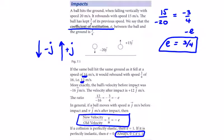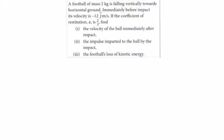In this example, a football of mass 2 kilograms is falling vertically towards horizontal ground with velocity minus 12j m/s. The coefficient of restitution e is two thirds. Find the velocity of the ball after impact.